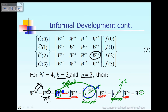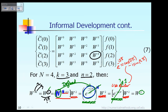Why is that term equal to 1? The reason is very simple: you can use the Euler identity. Using Euler's identity, E raised to the power minus i 2π equals cosine of 2π minus i times sine of 2π. Obviously, sine of 2π equals 0 and cosine of 2π equals 1, and that's why E raised to the power minus i 2π equals 1. So the bottom line is W raised to the power 6 is the same thing as W raised to the power 2.